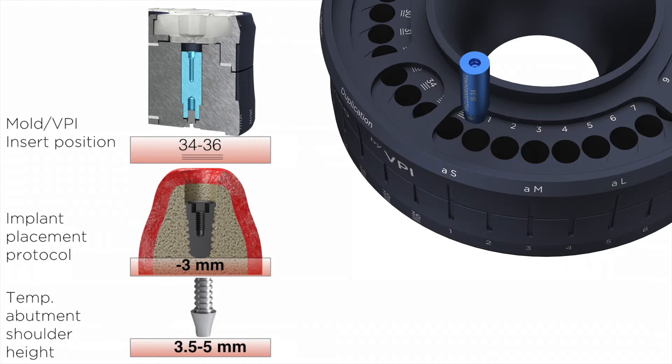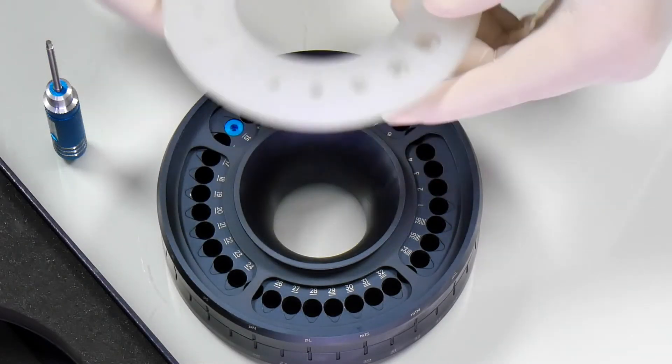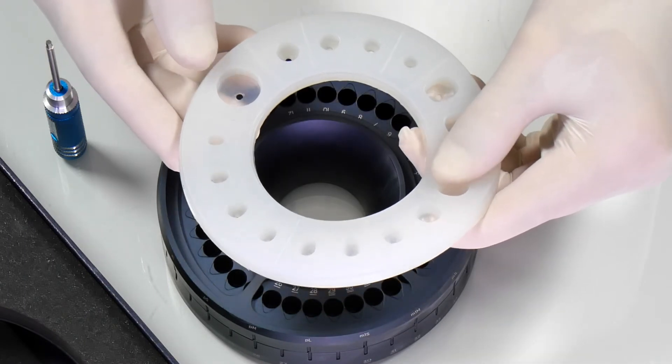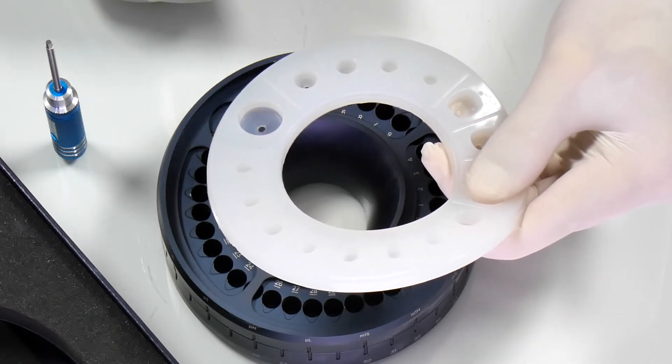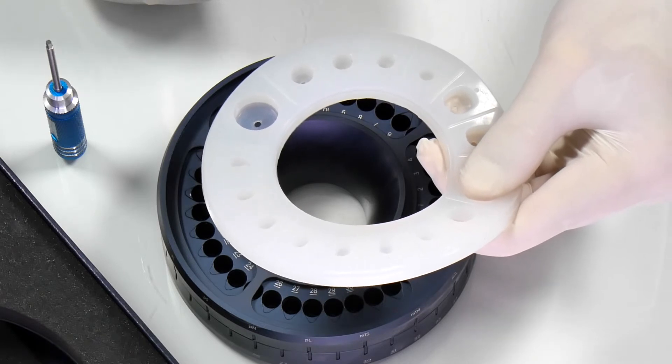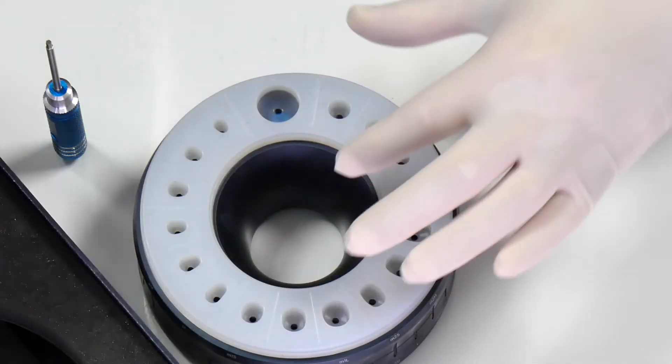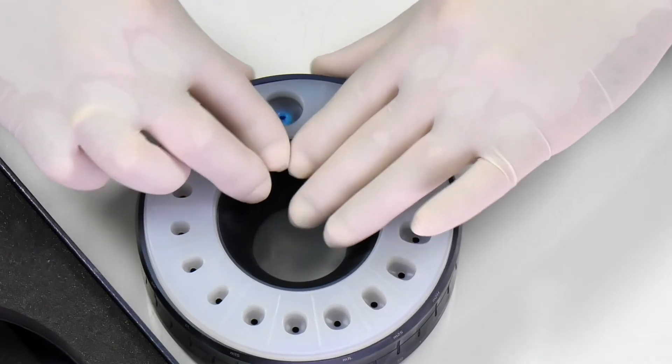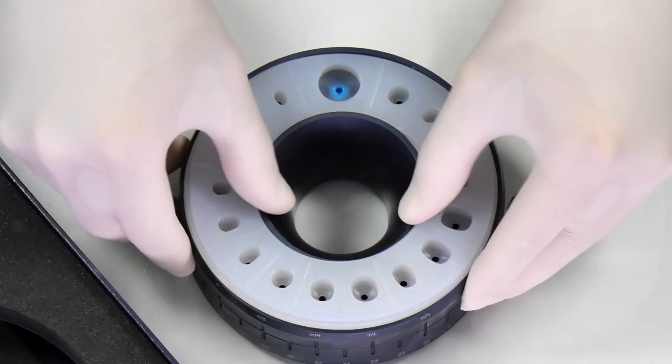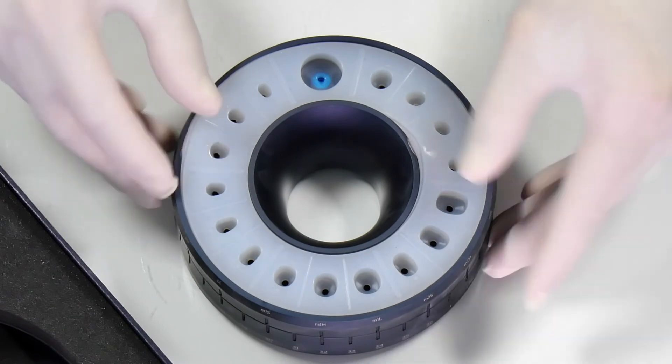Now you can take the silicone insert and align the duplication well with the socket that resembles the duplication well on the top ring of the mold. Once the two wells are properly aligned, you simply push the silicone insert into the base of the mold.